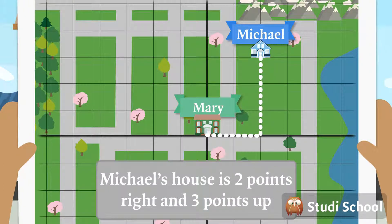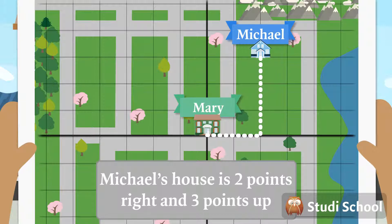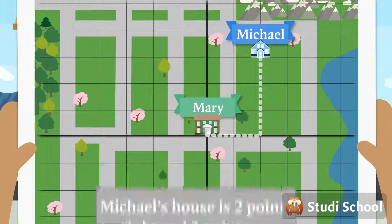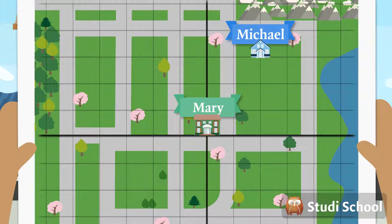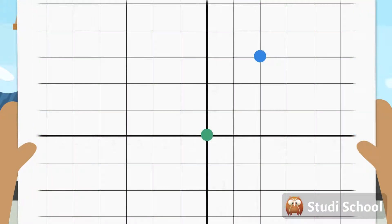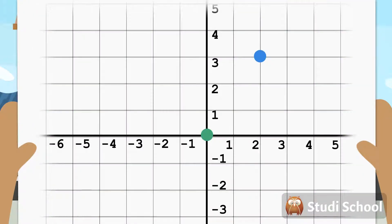Michael's house is two points right and three points up from Mary's. If we put numbers on each line, we have two number lines, one vertical and one horizontal.